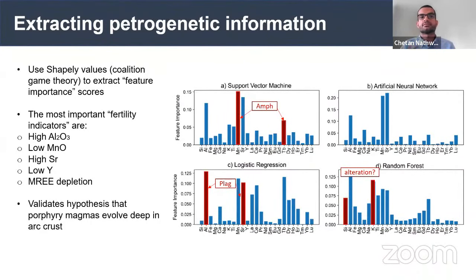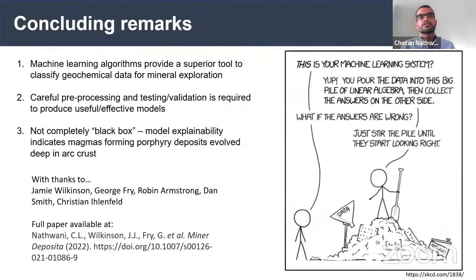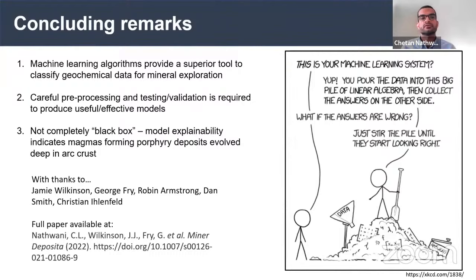Overall, this validates the hypothesis that porphyry magmas evolved deep in the crust. Manganese is an element I hadn't previously thought was so important, but machine learning has drawn my attention to it. We have a full paper available in Mineralium Deposita with a lot more detail on the theory and additional figures. Feel free to email me if you have any questions.